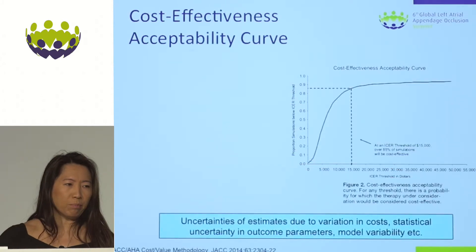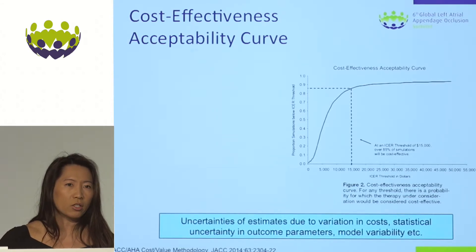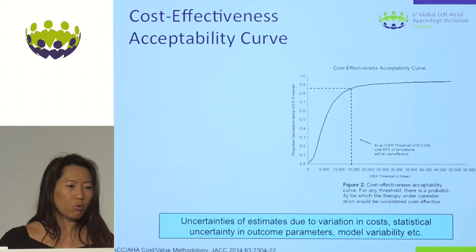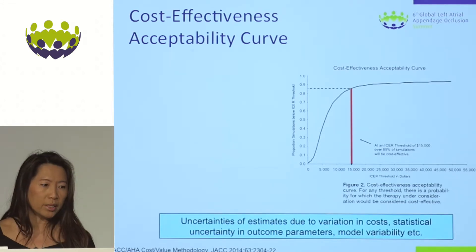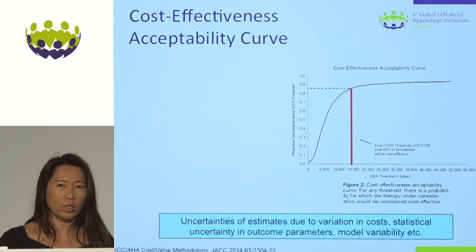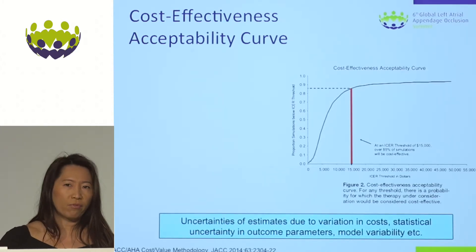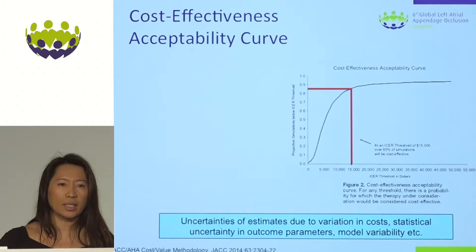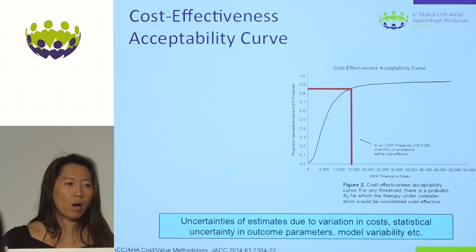Another very important parameter is the cost-effectiveness acceptability curve, because there are uncertainties in estimating these values based on differences in models, costs inputted, and statistical uncertainties in outcome parameters. This graphical representation makes it easier to interpret these studies by looking at different probabilities. For instance, if we pick $15,000 as an incremental cost-effectiveness ratio, in this particular therapy you have an 85% probability that the treatment is cost-effective.